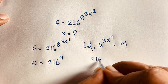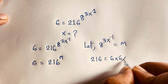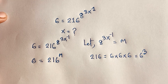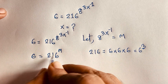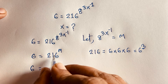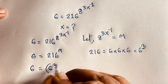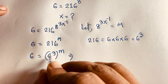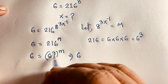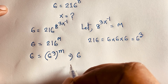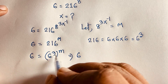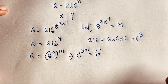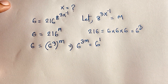Now, 216 — I can see that 216 equals 6 times 6 times 6, which is 6 to the power 3. So I can say here is 6 equals 6 to the power 3, and whole to the power m. According to exponential law, a to the power n whole to the power m equals a to the power nm. So it will be 6 to the power 3m.